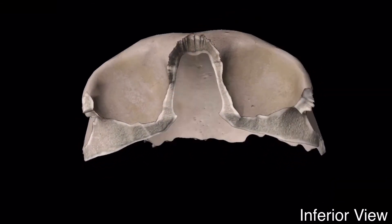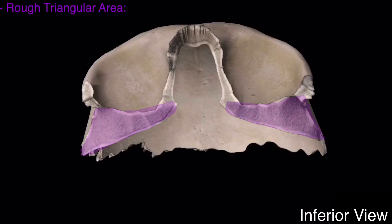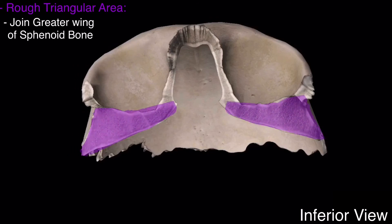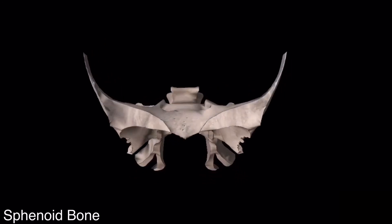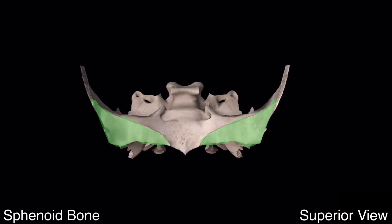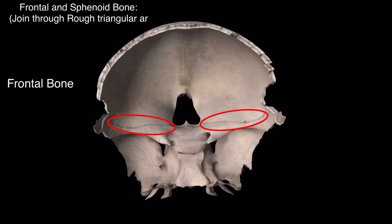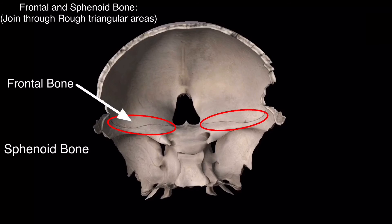If we look at the inferior view of the frontal bone again, there is a rough triangular area which articulates with the greater wing of the sphenoid bone. On the sphenoid bone there is also a rough triangular area, and these two triangular areas on the frontal bone and the sphenoid bone join with each other.